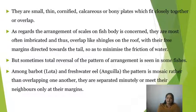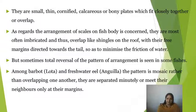As regards the arrangement of scales on fishes' body, they are most often imbricated and thus overlap like shingles on a roof, with their free margins directed towards the tail so as to minimize friction with water.